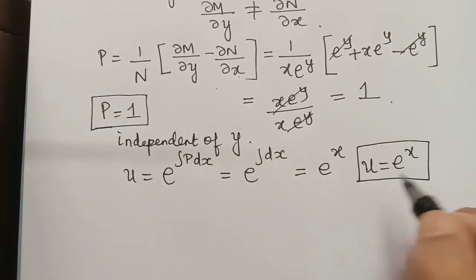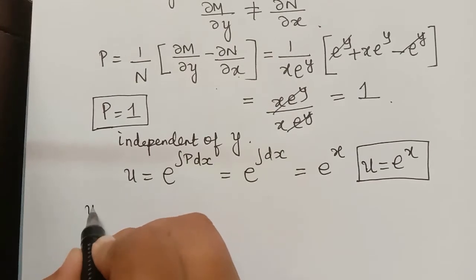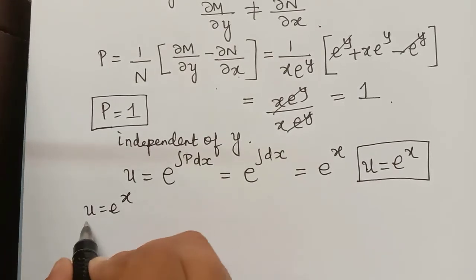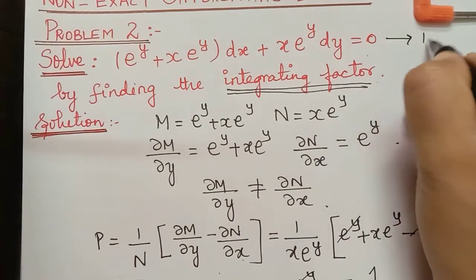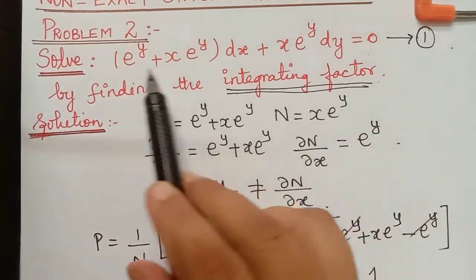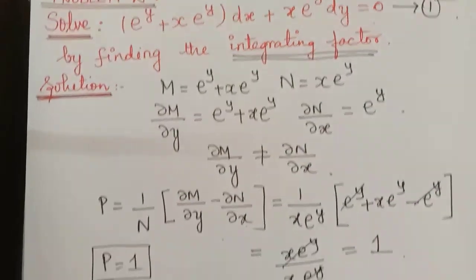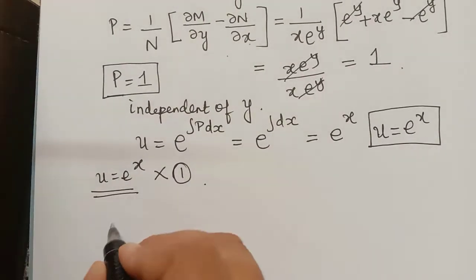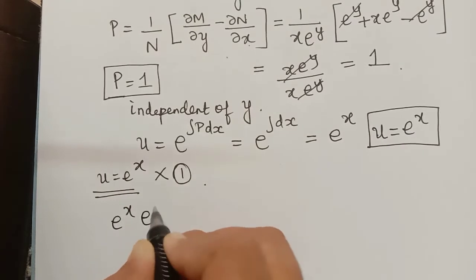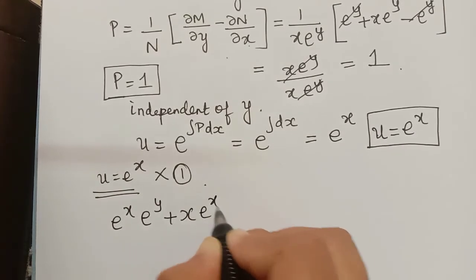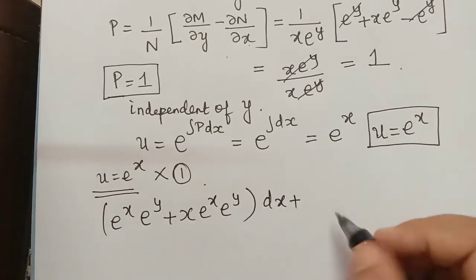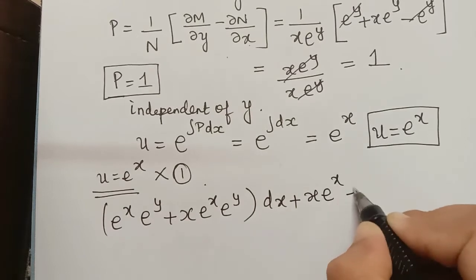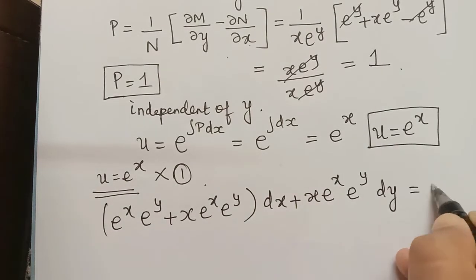Now we have found the integrating factor. We must multiply it into equation 1, the given equation. Multiplying throughout by e^x, we get: (e^x·e^y + x·e^x·e^y)dx + x·e^x·e^y dy = 0.